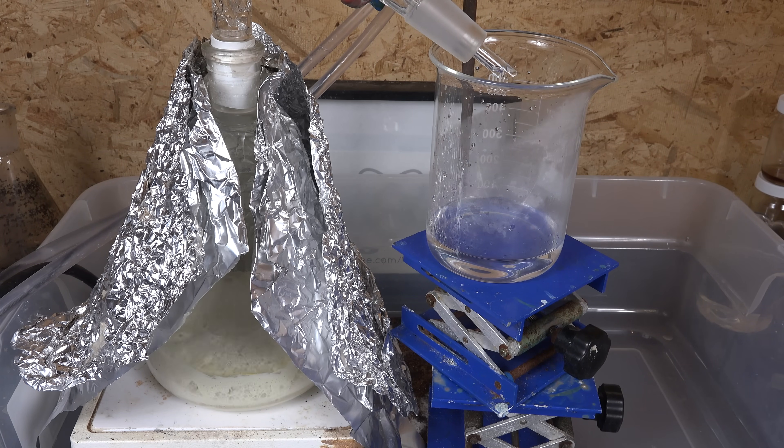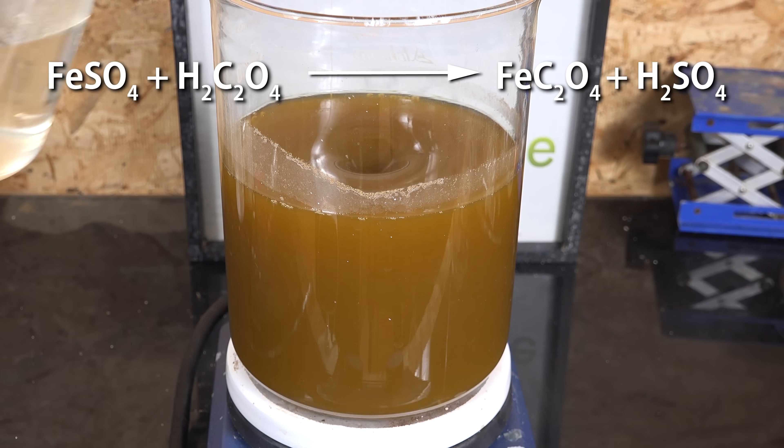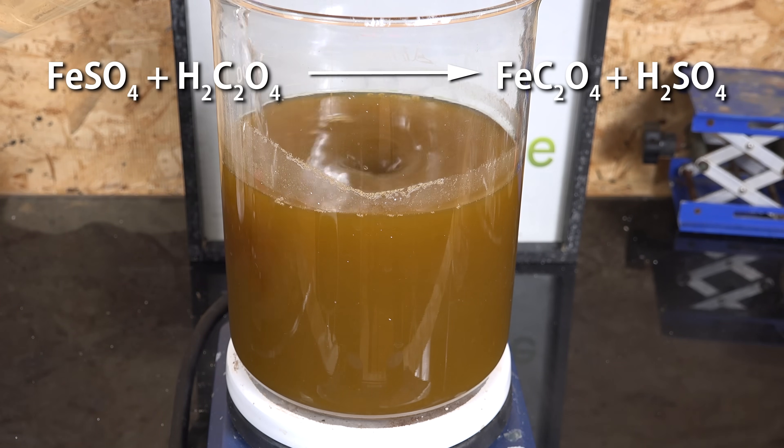The yield isn't high primarily because the reaction doesn't go to completion. As said before, reacting a strong acid with a weak acid salt tends to produce the weak acid and strong acid salt. So as sulfuric acid builds up, it reacts with the iron oxalate and converts it back to iron sulfate and oxalic acid.